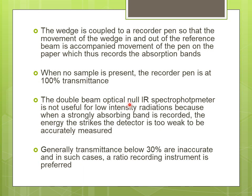The double beam optical null IR spectrophotometer is not useful for low intensity radiations. When a strongly absorbing band is recorded, the energy that strikes the detector is too weak to be accurately measured. It has been estimated that transmittance values below 30% are inaccurate. In such cases, the optical null method will not work and a ratio recording instrument must be used instead.